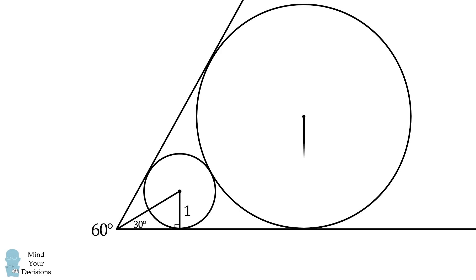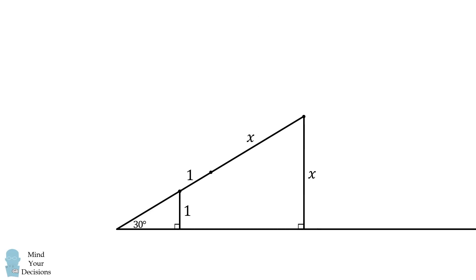From the second circle, construct a radius to one point of tangency. Suppose this radius is equal to x. Now connect the two centers of these two circles. The distance between them will be equal to 1 plus x. Let's now just focus on these right triangles. Here we have a right angle triangle where one angle is equal to 30 degrees. Therefore, we have a 30-60-90 special right triangle. The shorter leg is equal to 1, and therefore its hypotenuse will be equal to twice that length, or equal to 2.